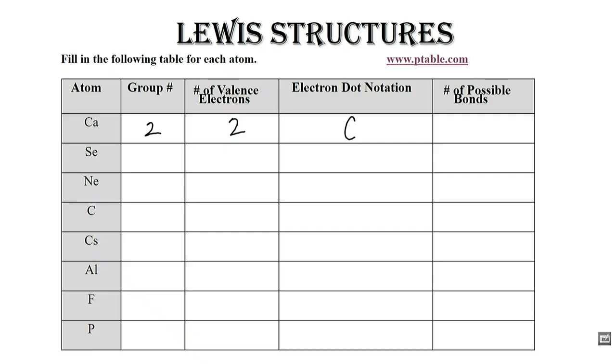...we draw them in this way. When drawing Lewis dot structures for atoms, you draw one electron at a time, one dot at a time, and you go around the symbol. Since we have two electrons that are available, calcium is capable of making two bonds.